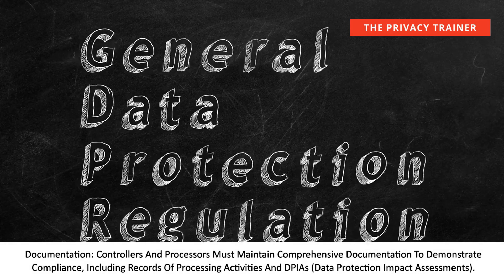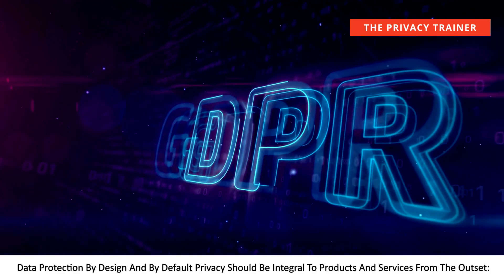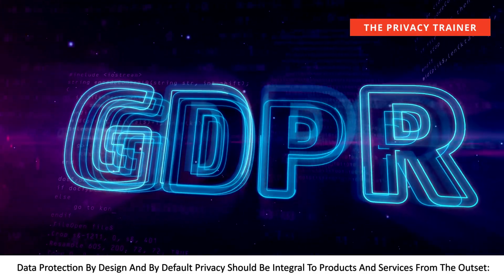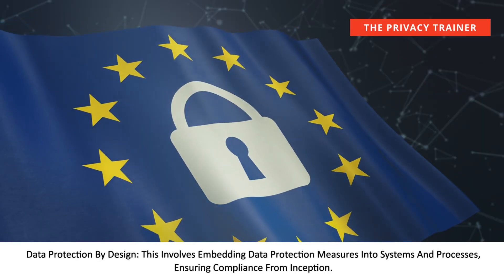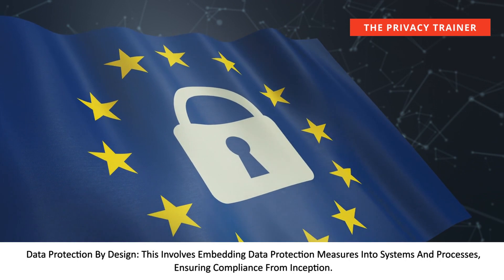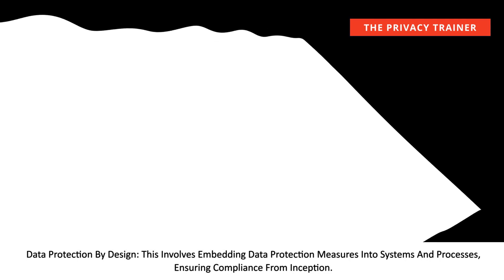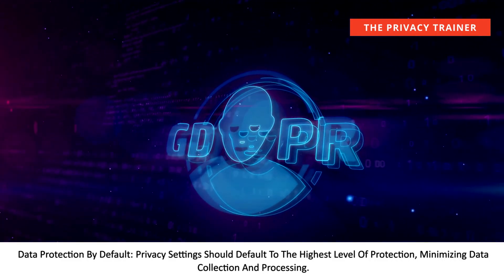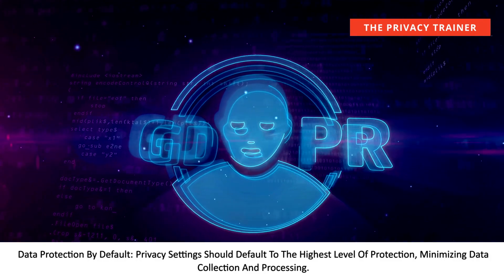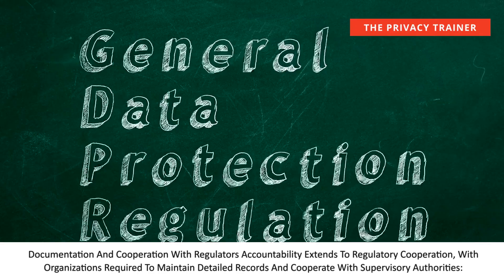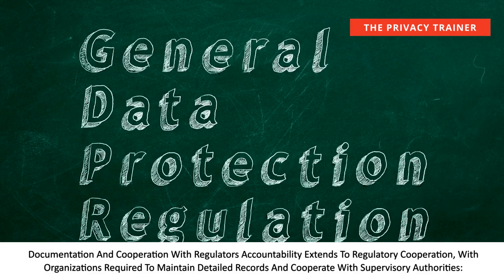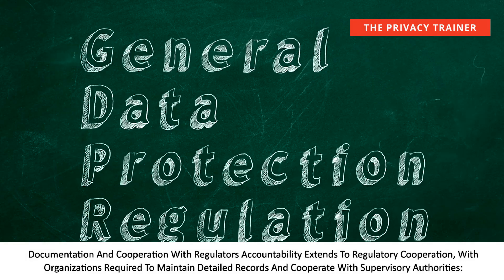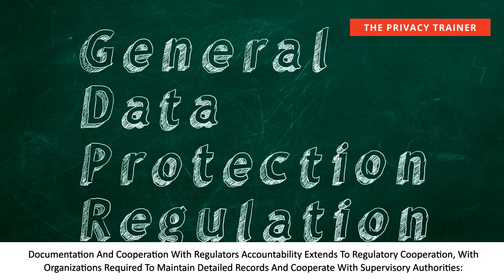Data protection by design and by default requires that privacy be integral to products and services from the outset. Data protection by design involves embedding data protection measures into systems and processes, ensuring compliance from inception. Data protection by default means privacy settings should default to the highest level of protection, minimizing data collection and processing. Accountability extends to regulatory cooperation, with organizations required to maintain detailed records and cooperate with supervisory authorities.